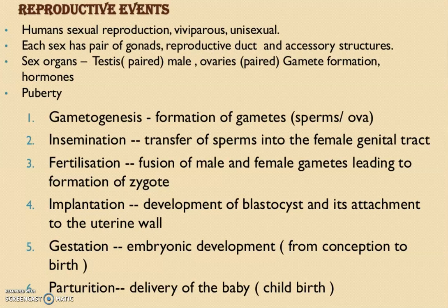In reproductive events, there are key terms to discuss: gametogenesis, insemination, fertilization, implantation, gestation, and parturition. Gametogenesis is the formation of gametes — that is, sperm or ova. The process of formation of gametes is called gametogenesis.